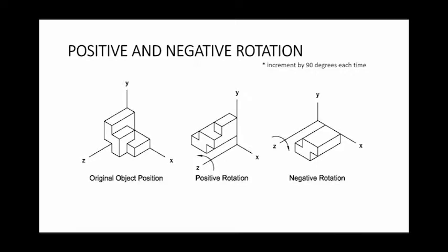Let's see what it looks like when we rotate positively and negatively. You can see our original object position on the far left of the slide. You can see in the center illustration that we're positively rotating the object on the z-axis. Notice again that we're only incrementing by 90 degrees.